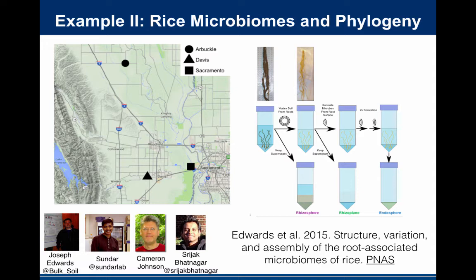I'm going to give you the latest work that's been published from my lab. We have a collaboration with a rice biology lab at UC Davis — Professor Sundar and an amazing graduate student of his, Joseph Edwards — and a few people in my lab collaborated on this project to go out and study in the field and also in the lab different varieties of rice and how they associate with communities of microbes on their leaves, stems, roots, and in the soil around them.